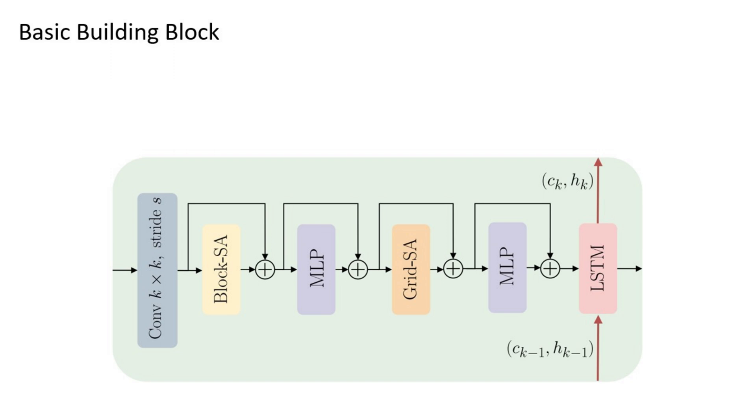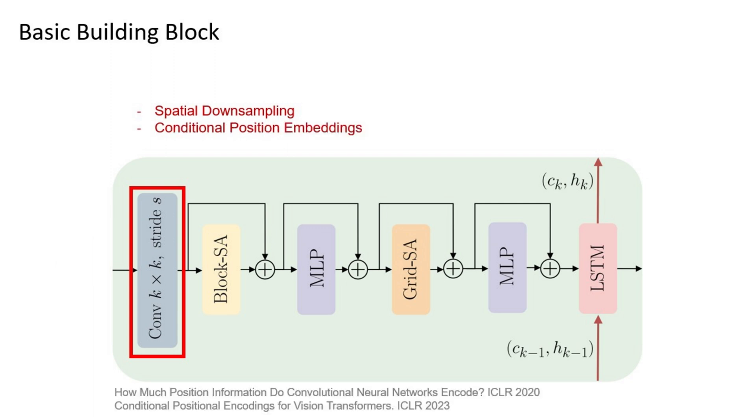This led us to a compact building block that efficiently unifies spatial and temporal feature aggregation. The process begins with the downsampling of incoming features using a strided convolution. This convolution also acts as a conditional positional embedding for the subsequent transformer blocks.